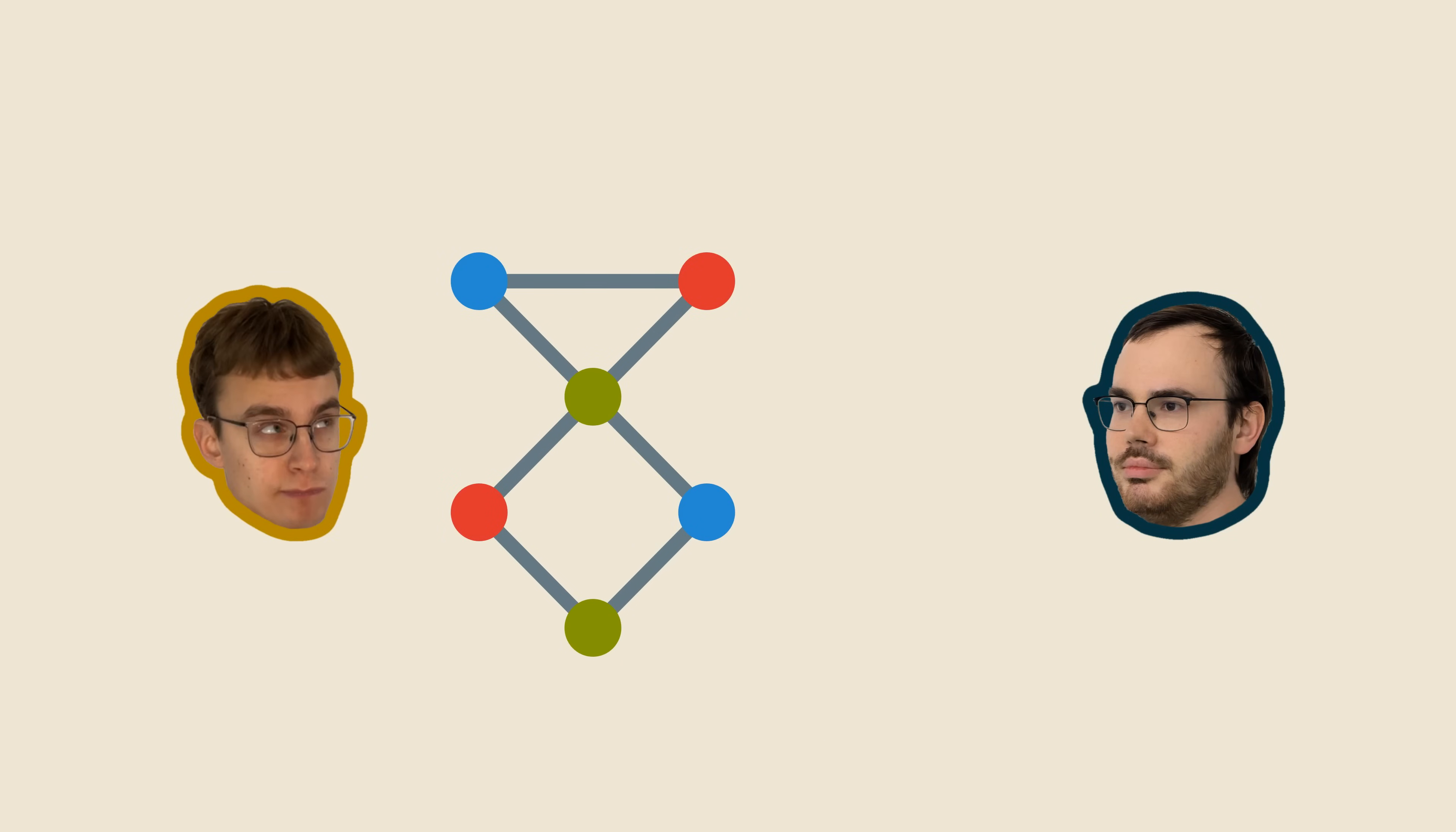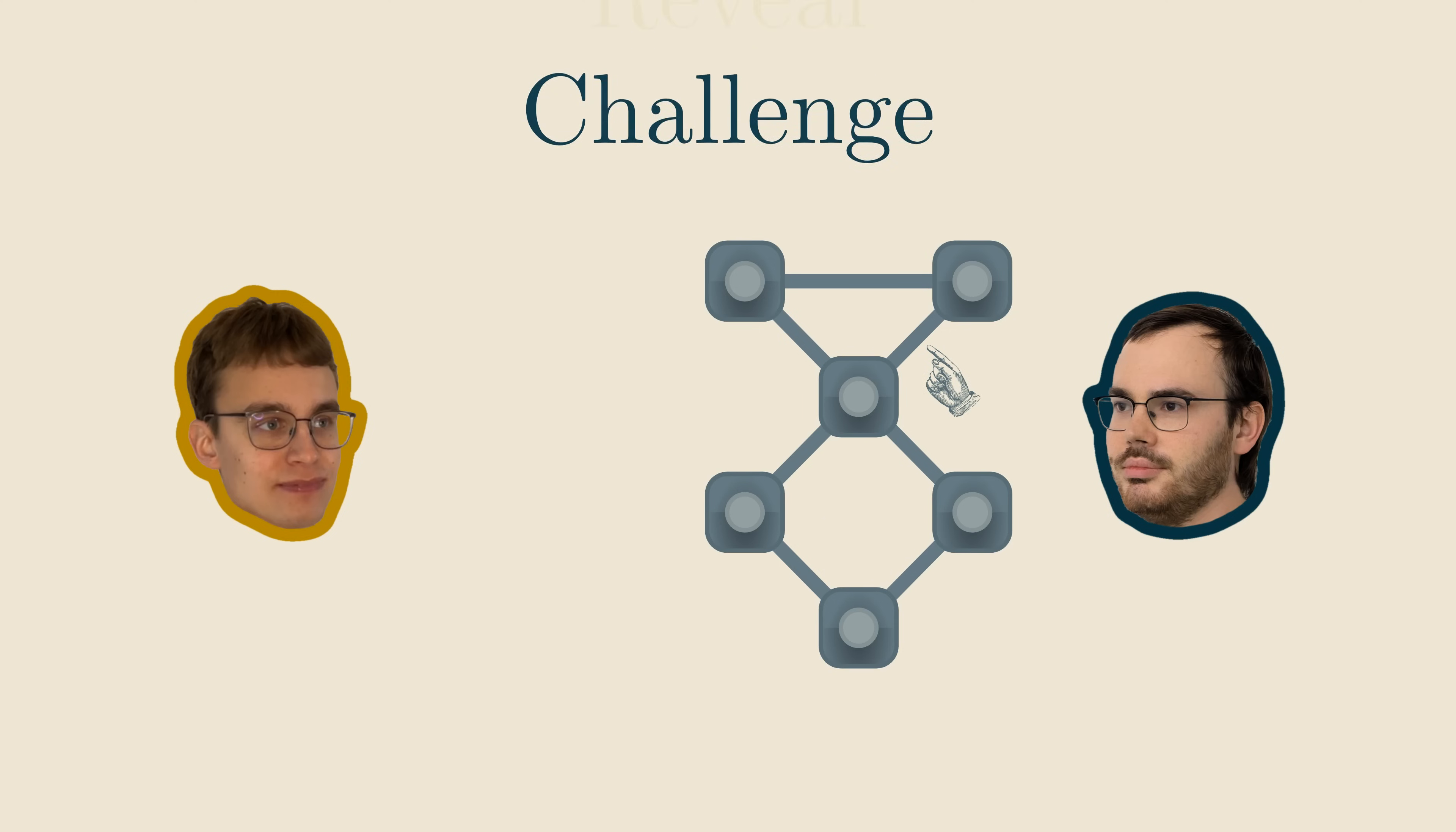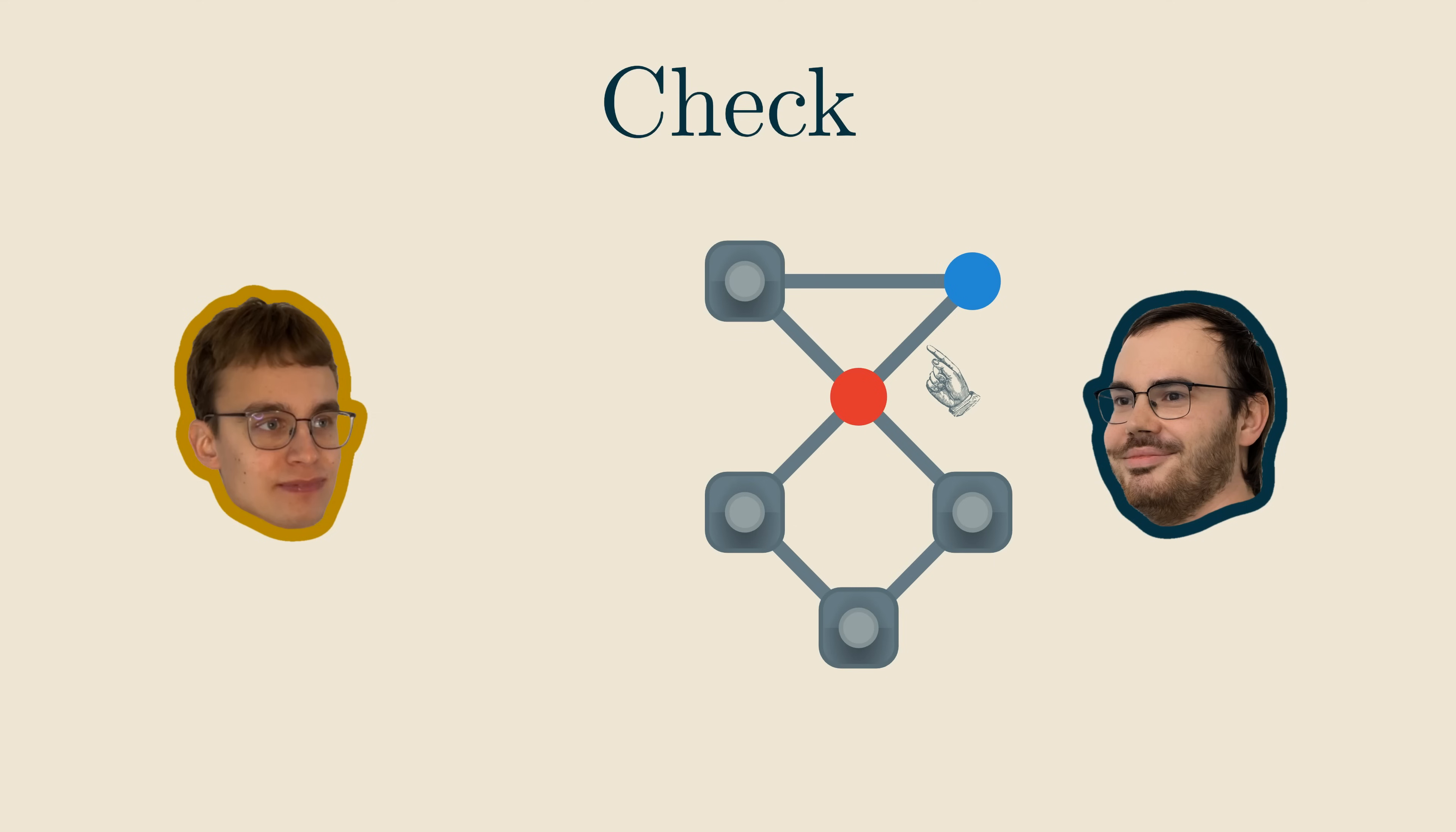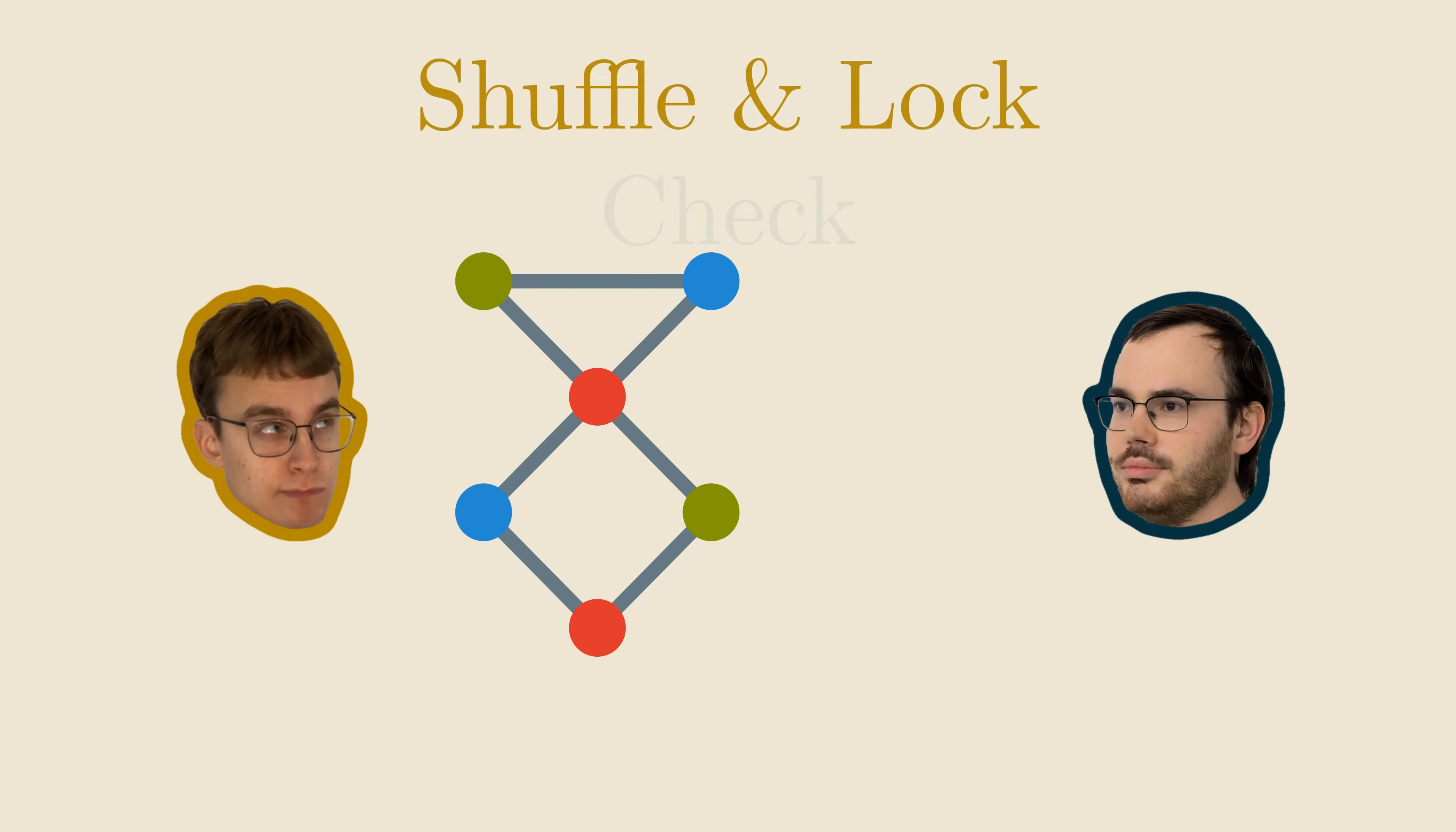With this trick, I'm happy again since I'm not giving away any useful information. And Vasek remains happy since it still holds that if I try to cheat, it's very likely that he'll catch me. What you're watching now is the final zero-knowledge proof in action. It's very elegant, isn't it?